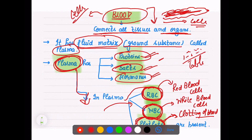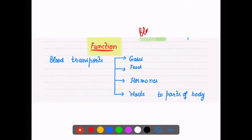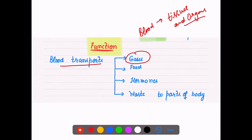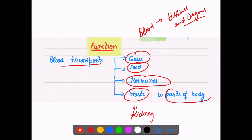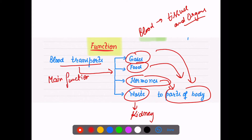The function of blood: since blood is passing through and connecting almost all tissues and all organs, it means it is transporting something. It helps in transportation of gases, transportation of food coming through your stomach. It is flowing throughout the body carrying hormones, carrying waste and sending it to the kidney, gases to the lungs, food to the intestine and stomach, and hormones to the reproductive structure and other parts of the body. Blood performs many very important functions.